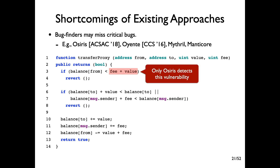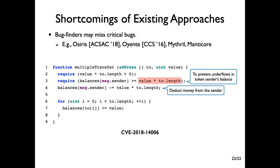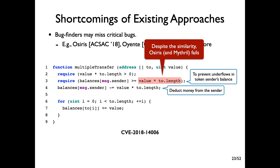Unfortunately, existing approaches for analyzing safety of smart contracts are unsatisfactory. Specifically, bug finders may miss critical bugs. For example, among the four bug finders in the slide, only OSIRIS can detect this vulnerability. Now consider another vulnerable function with a similar vulnerability: the statement at line 3 aims to prevent the underflow at line 4, but the sanity check for overflow by the multiplication is missing. Despite the similarity between the vulnerabilities, OSIRIS now fails.